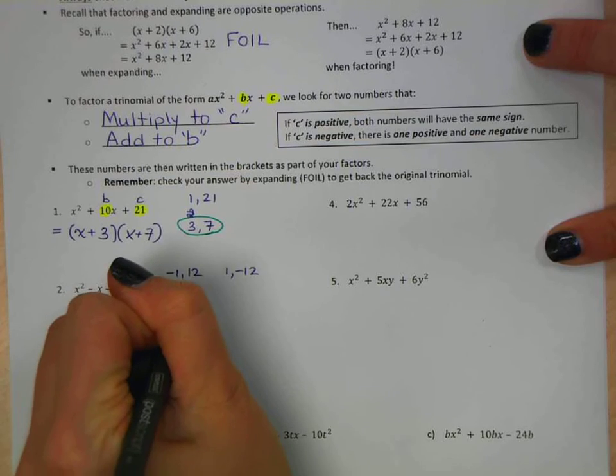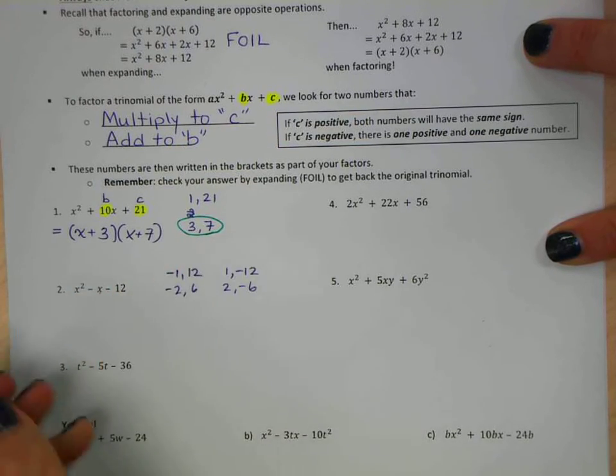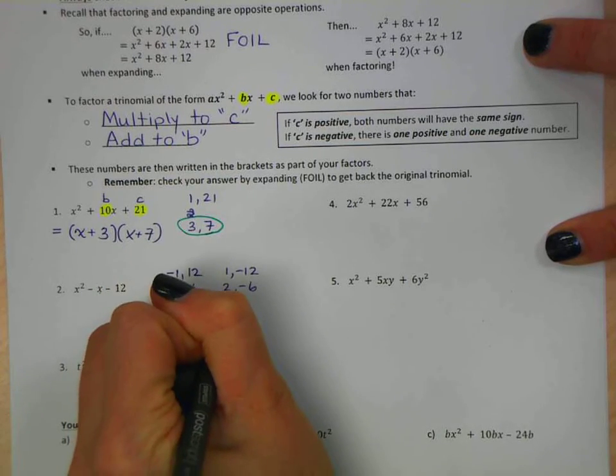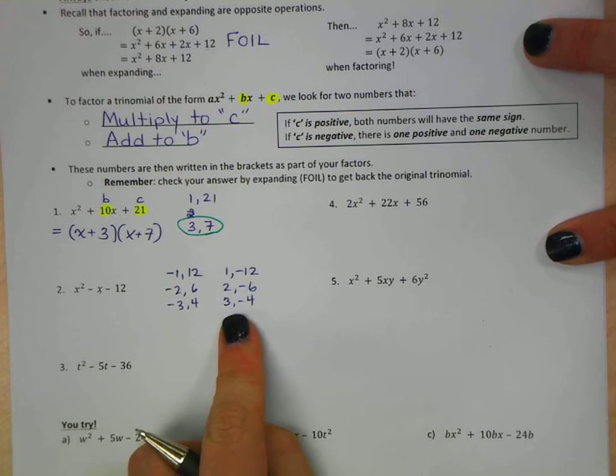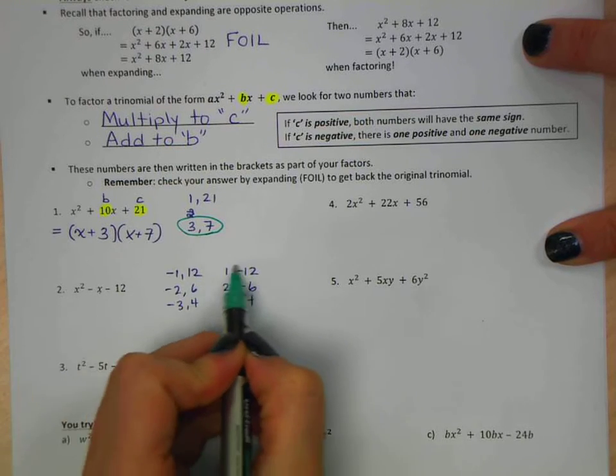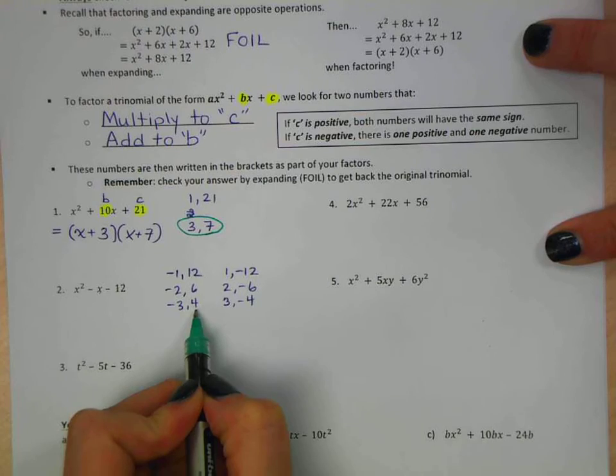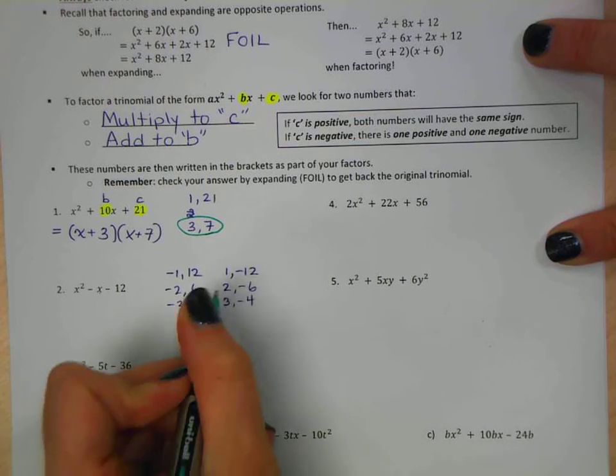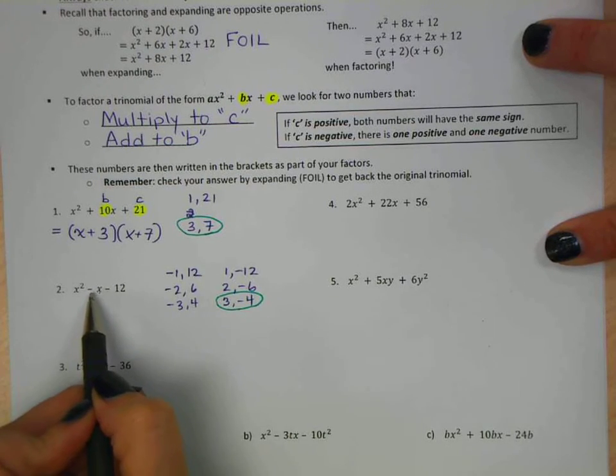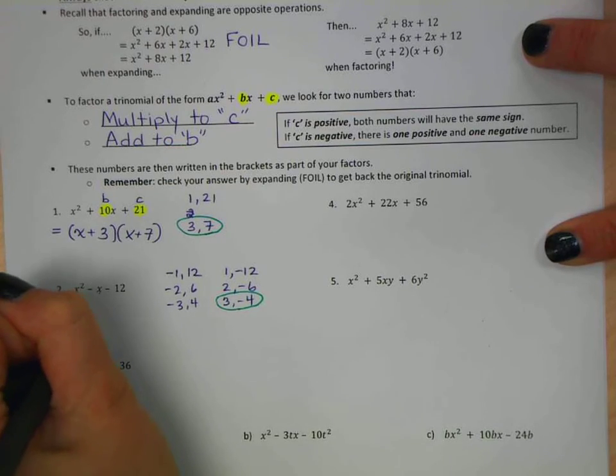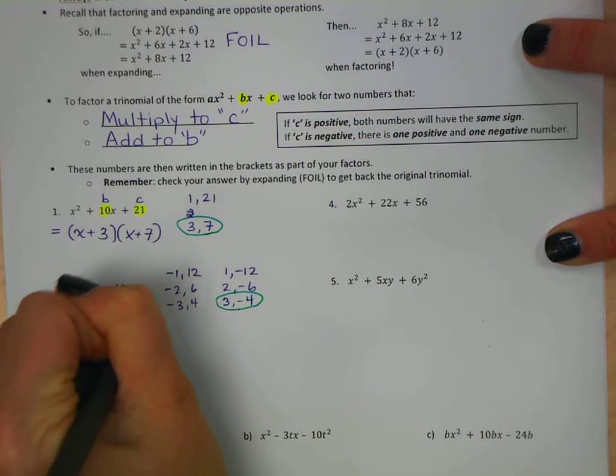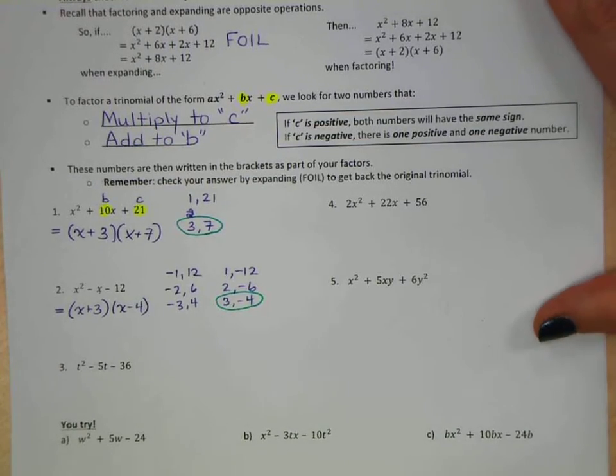We've got negative 2 and 6, or positive 2 and negative 6. And then we have 3 and 4. So negative 3, positive 4. Positive 3, negative 4. Each of these sets of numbers multiplies to give us negative 12. But the question is, what adds to negative 1? Well, obviously, these are not going to do it. So is it negative 3 plus 4, or positive 3 minus 4? Well, we're trying to get to negative 1. So these are the set of numbers that add to negative 1. So we have x plus 3 and x minus 4.